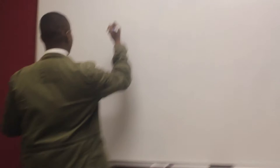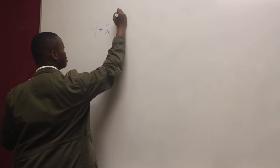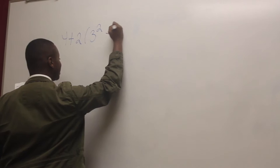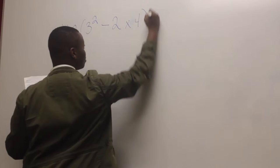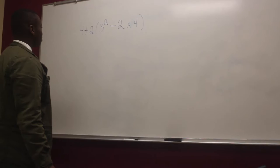The first problem is four plus two parentheses three squared minus two times four, close braces. All right, and basically what you're going to be doing is solve using the order of operations.